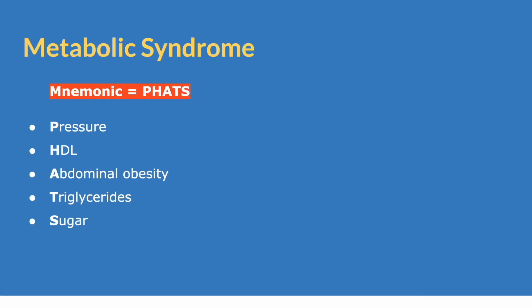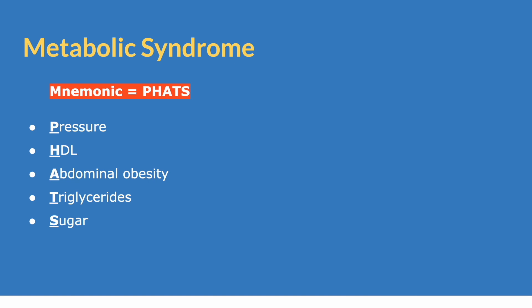The mnemonic is FATS, where P stands for pressure, H stands for HDL, A stands for abdominal obesity, T stands for triglycerides, and S stands for sugar. As long as you're able to remember the mnemonic, you should be able to remember what each letter stands for, and we'll go into a bit of detail about what exactly you need to know about each one.